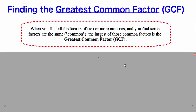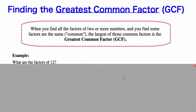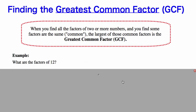You will sometimes be asked to find the greatest common factor, or GCF. Write this down in your notebook. When you find all the factors of 2 or more numbers, you find some factors are the same, or common. The largest of those common factors is the greatest common factor. So let's find some GCFs.